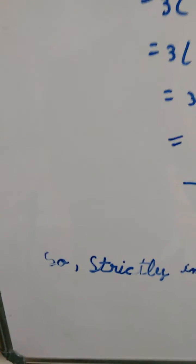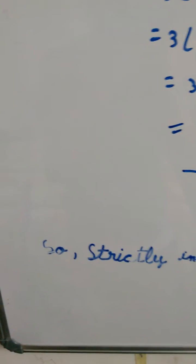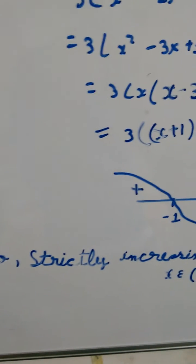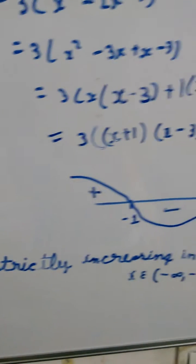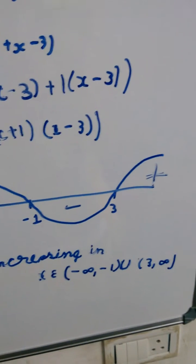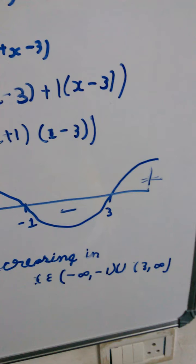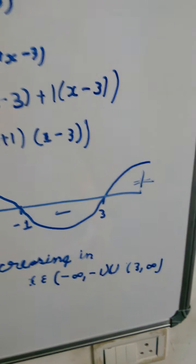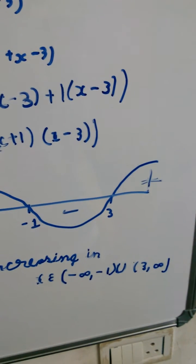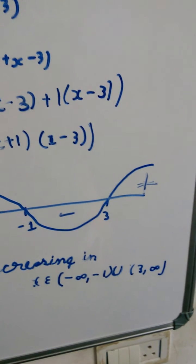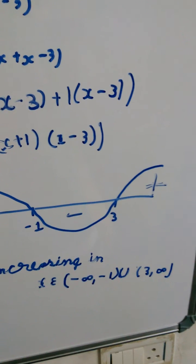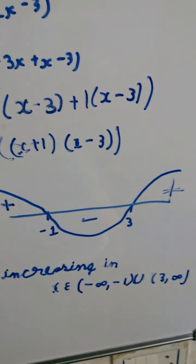And finally, we conclude that the function is strictly increasing in x belonging to minus infinity to minus 1, union 3 to infinity. Thank you.